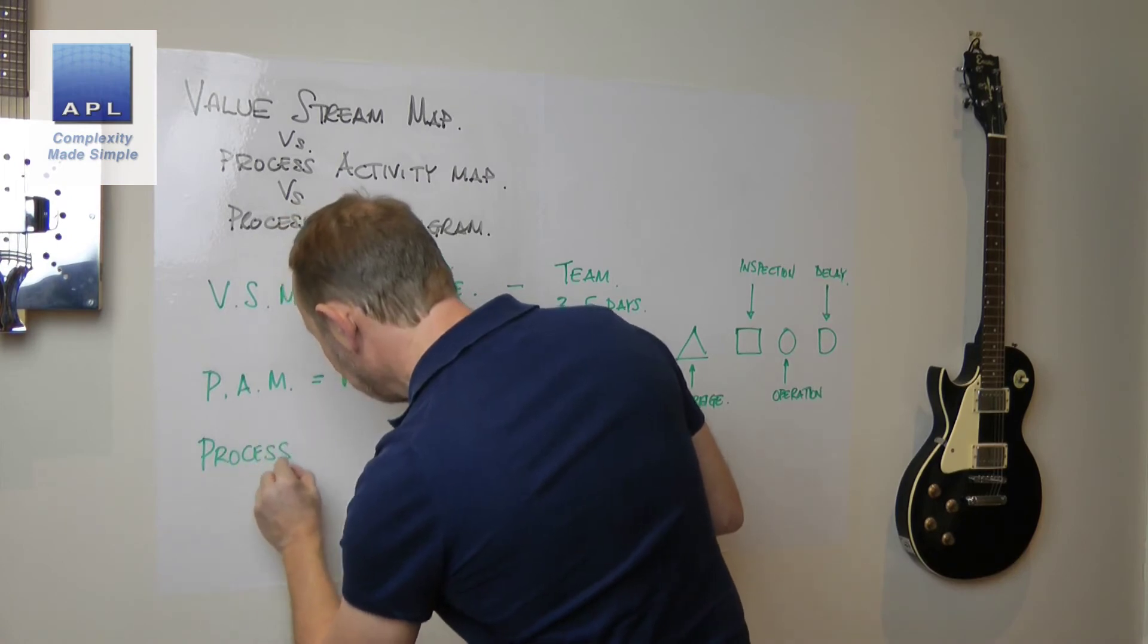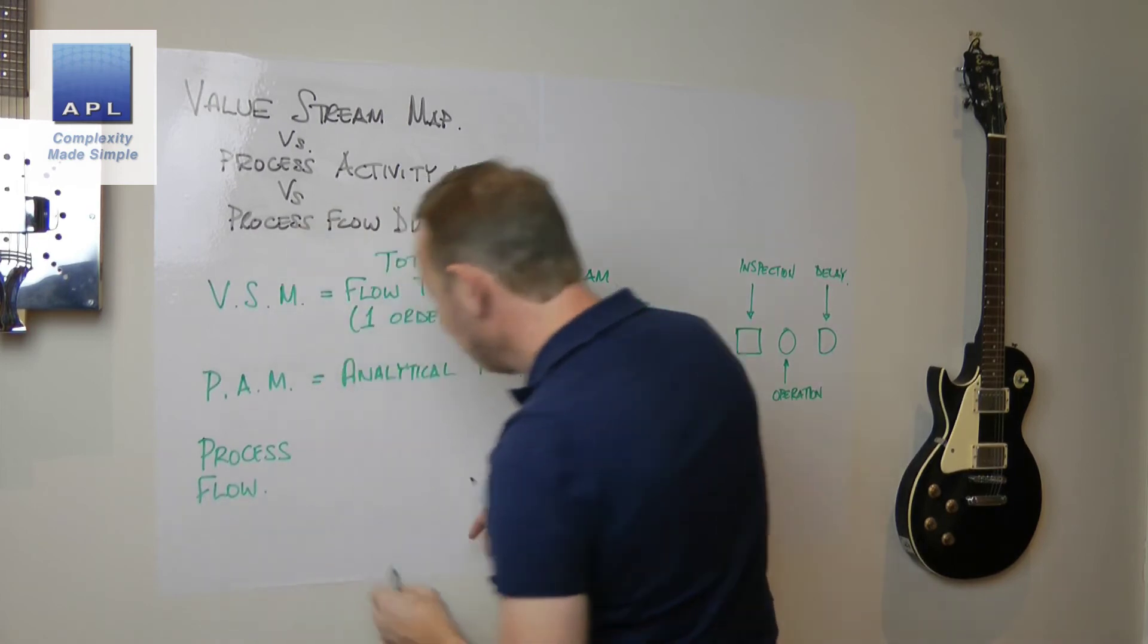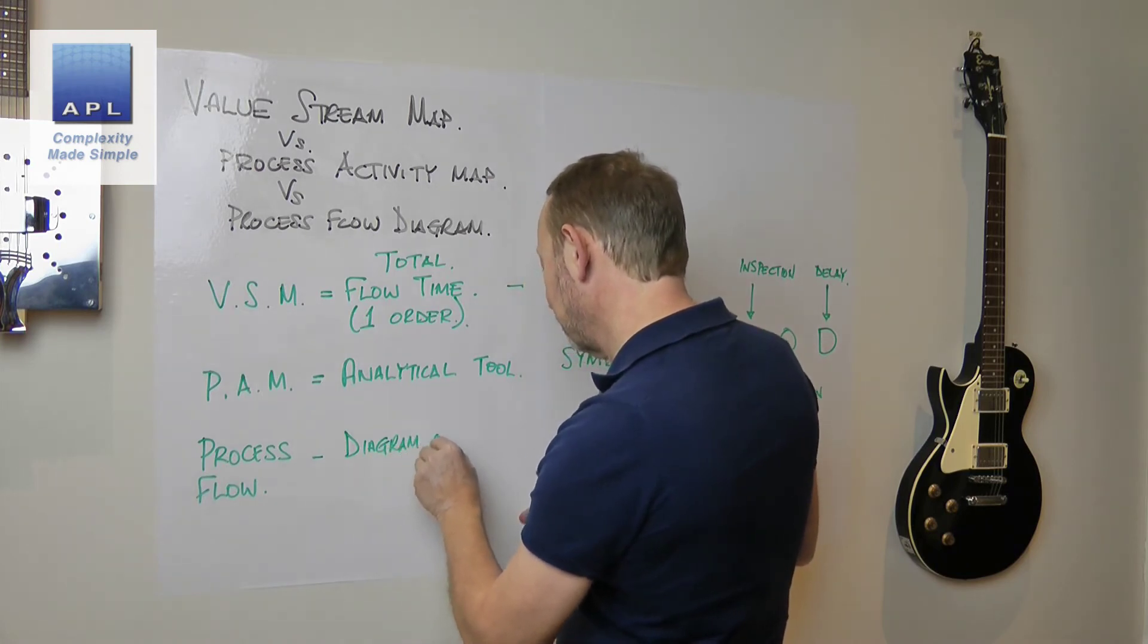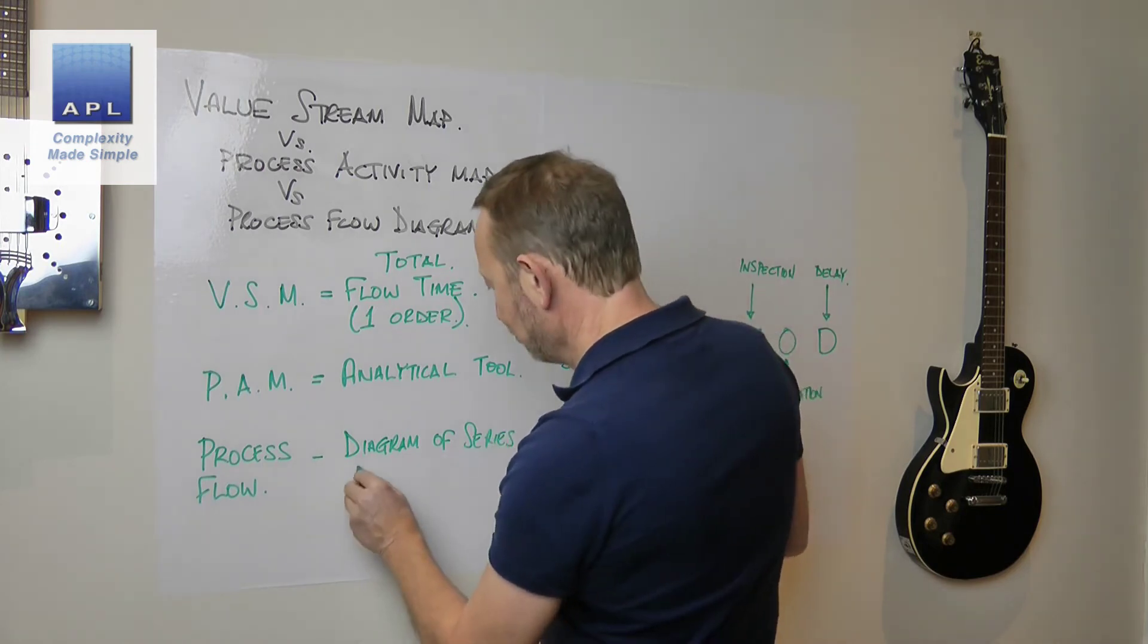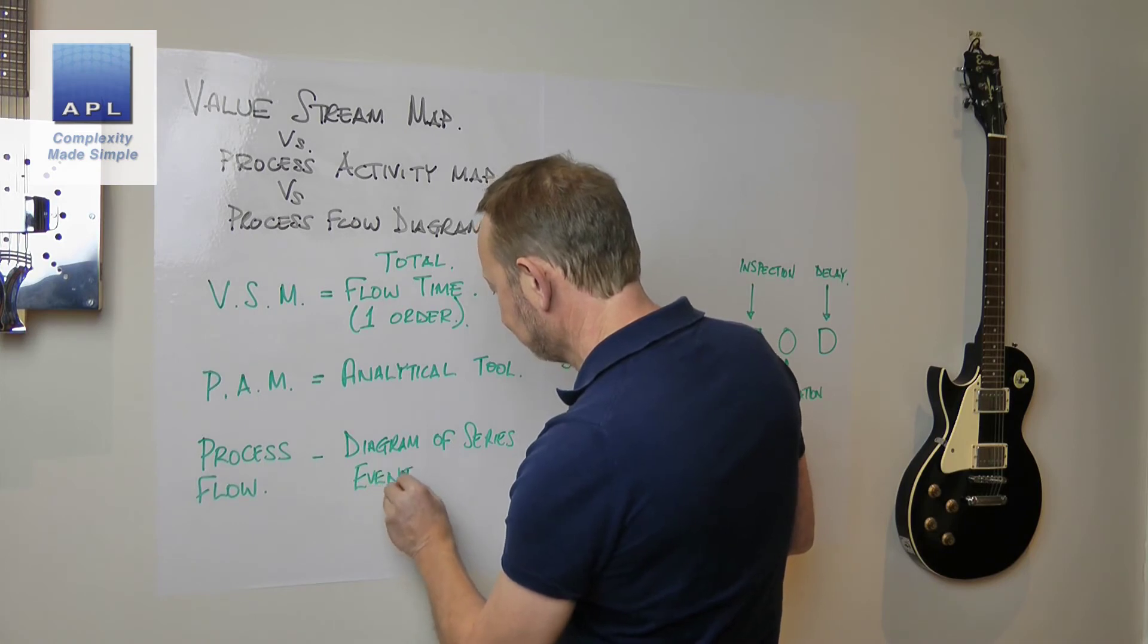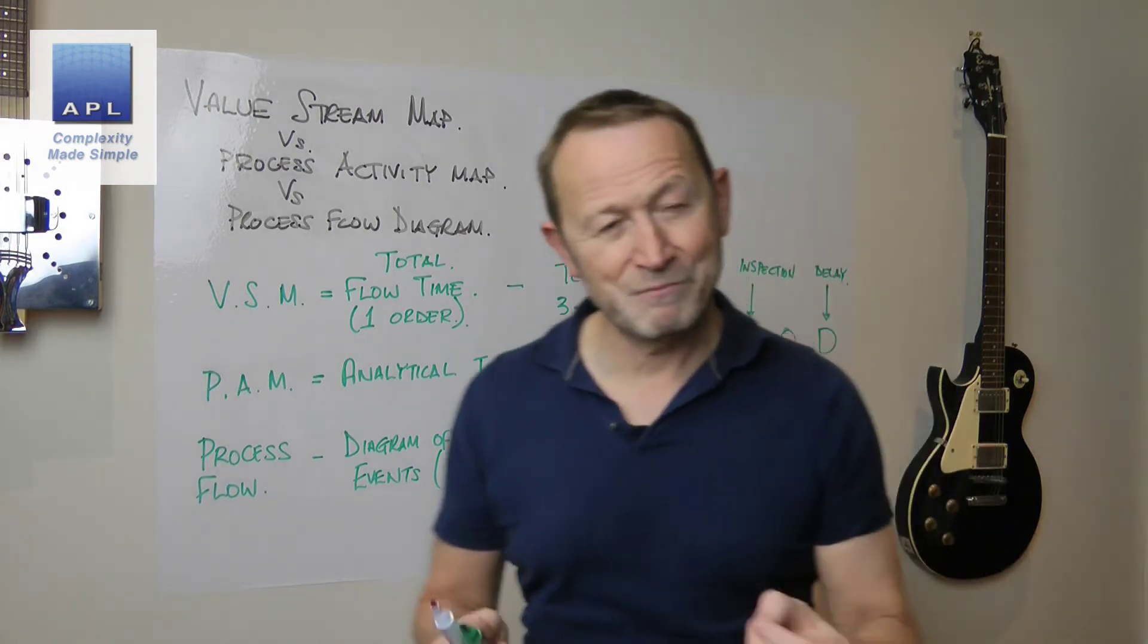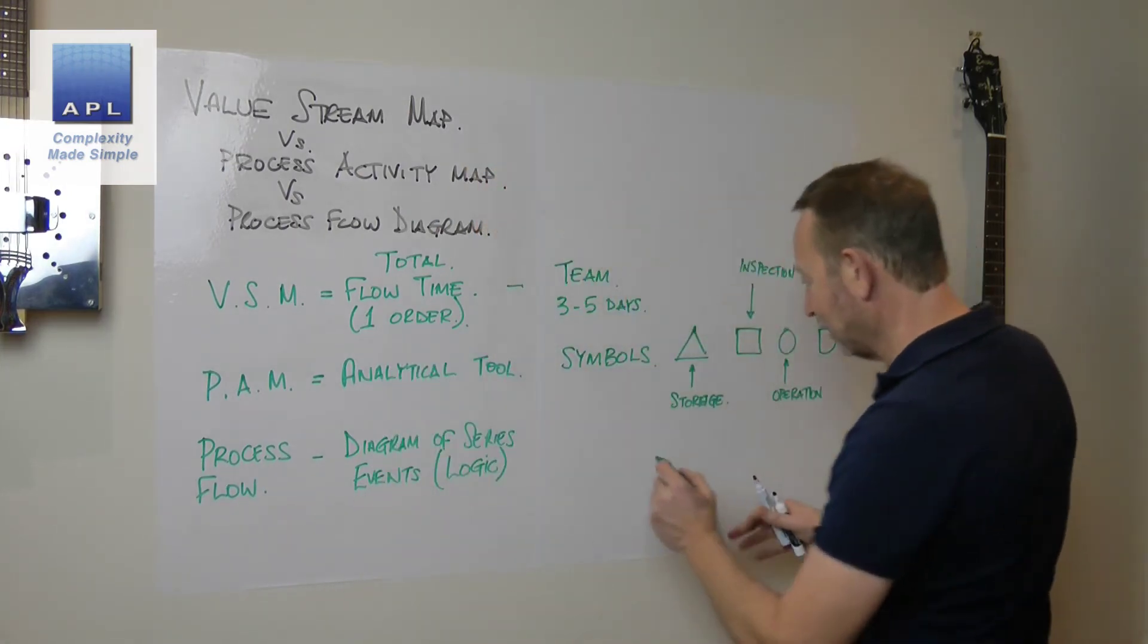Finally, the process flow diagram. The process flow diagram is very straightforward. It's a diagram of a series of events and it could have some kind of logic embedded in it.